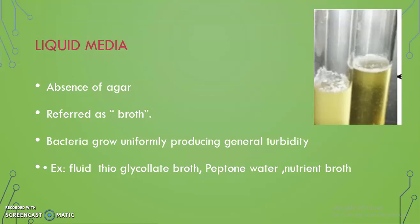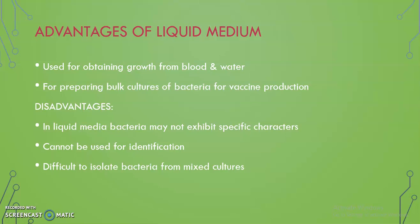Liquid media — here agar is absent; it is referred to as broth. Bacteria grow uniformly producing a general turbidity in the liquid media. Examples are thioglycollate broth, peptone water, nutrient broth, etc. It is used for obtaining broth from blood and water, and for preparing bulk cultures of bacteria. Disadvantage: in liquid media bacteria do not exhibit any special characteristics and cannot be used for identifying the bacteria. It is very difficult to isolate bacteria from mixed cultures.